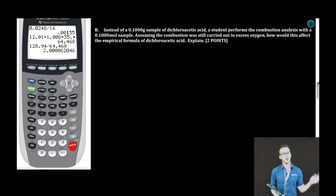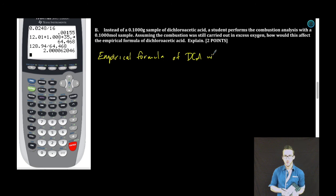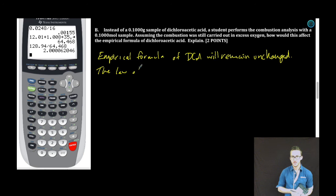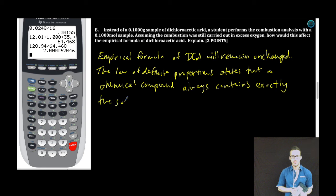All right. And then lastly, it says, instead of a 0.1000 gram sample of dichloroacetic acid, a student performs the combustion analysis with a 0.1000 mole sample. It says, assuming the combustion was still carried out in excess oxygen, how would this affect the empirical formula of dichloroacetic acid? Explain. All right. Law of definite proportions doesn't matter the size of your sample of dichloroacetic acid. If it's dichloroacetic acid, the ratio of the elements in that compound are always going to be the same. So empirical formula of DCA will remain unchanged. Boom. Explanation. The law of definite proportions states that a chemical compound always contains exactly the same proportion of elements by mass. Boom. And we are done.